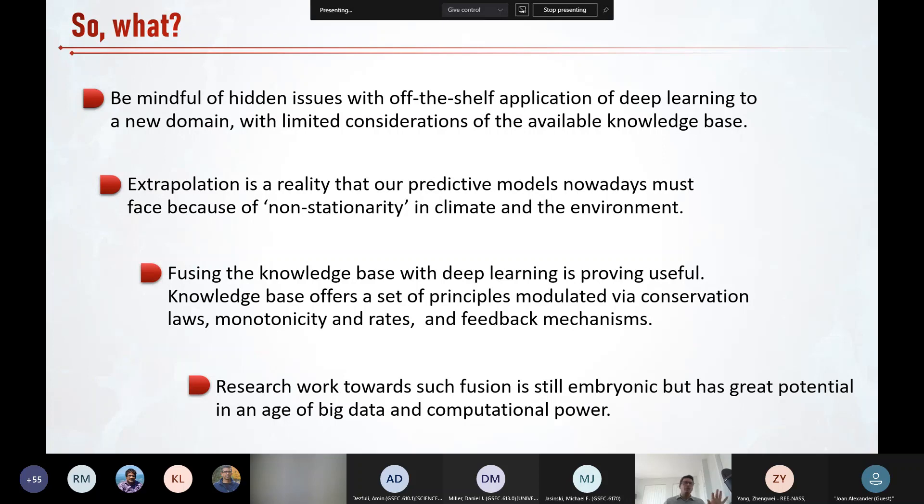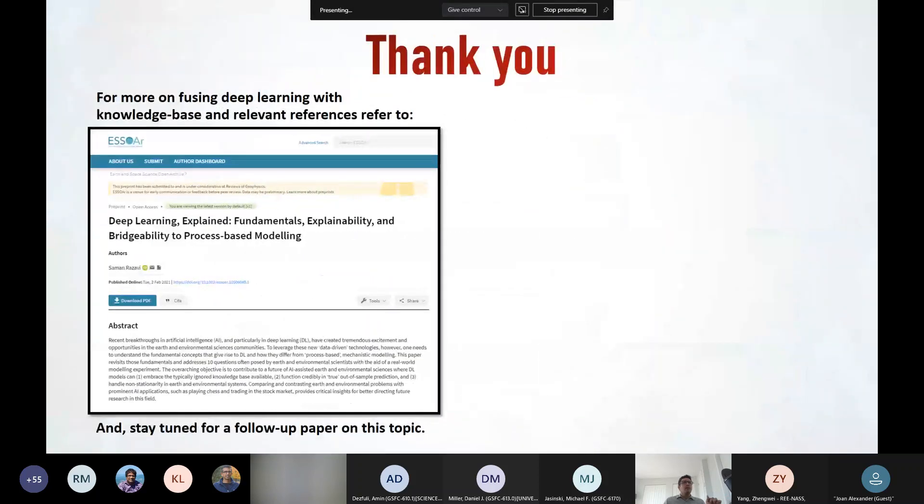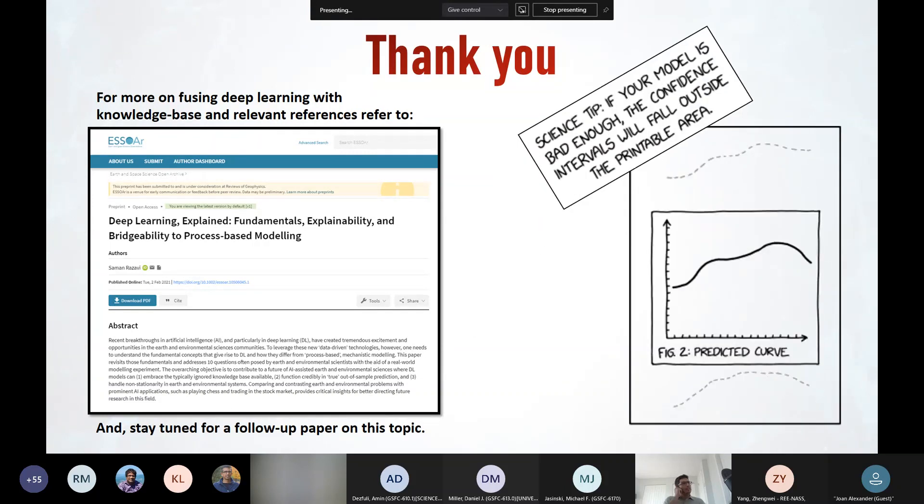And that is about where I'm going to end this talk. Just want to add that for more information on fusing deep learning and knowledge base and a hydrologic modeling example on how this can happen and some good references in our field and also beyond in computer science, you may refer to this paper that I introduced at the beginning. And I think the final version of this paper will be accepted for publication hopefully in a couple of weeks. And a follow-up piece will come out soon. Thank you all very much for your time and the invite and everything. Very exciting. And yeah, just a science tip here that I hope you don't miss out. Thank you.